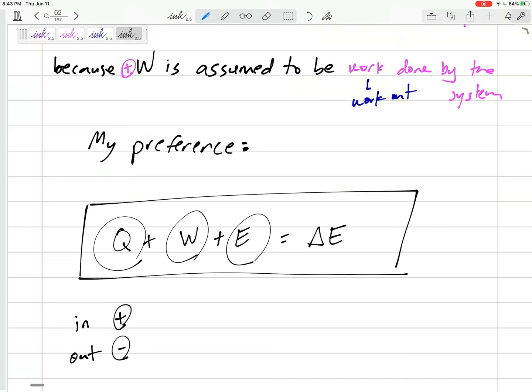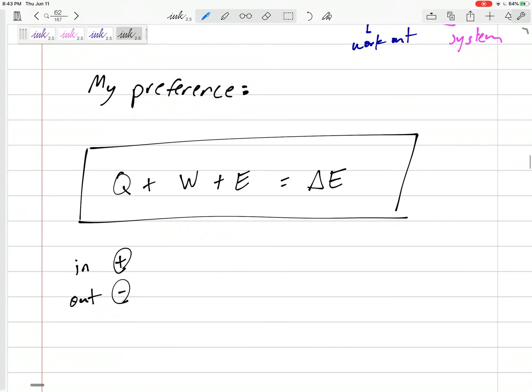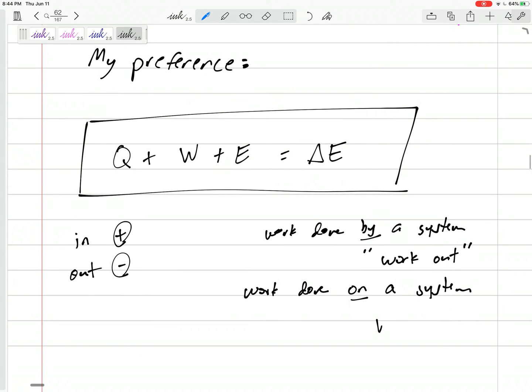So energy flowing in, in mass flowing in is positive, out is negative. So I'm going to do in is positive, out is negative. Work - let's just clarify - work done by a system is work out. But work put into or work done on a system is work in.